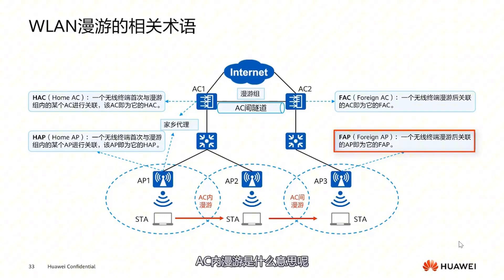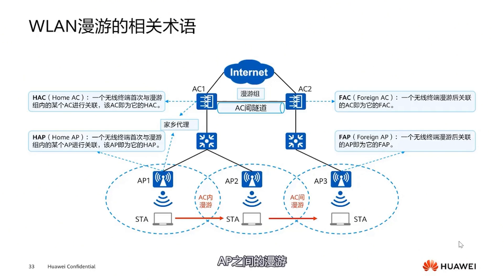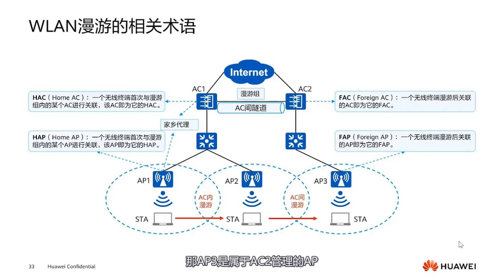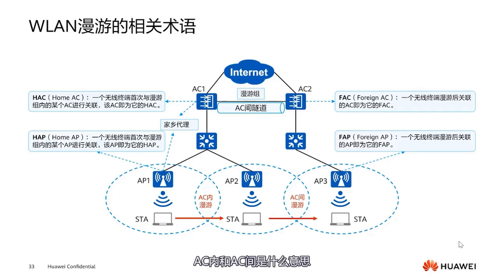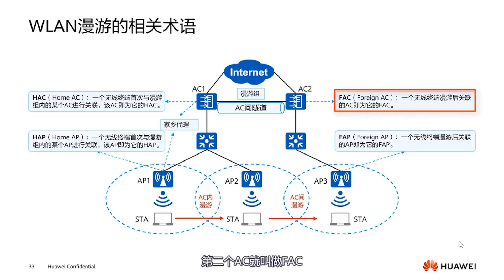Intra-AC roaming refers to roaming between different APs managed by the same AC. When my terminal gets to AP3 and connects to AP3, which is managed by AC2, meaning I have crossed over to another AC, this is called inter-AC roaming. You need to pay attention to the distinction between intra-AC and inter-AC. The second AC is called FAC.